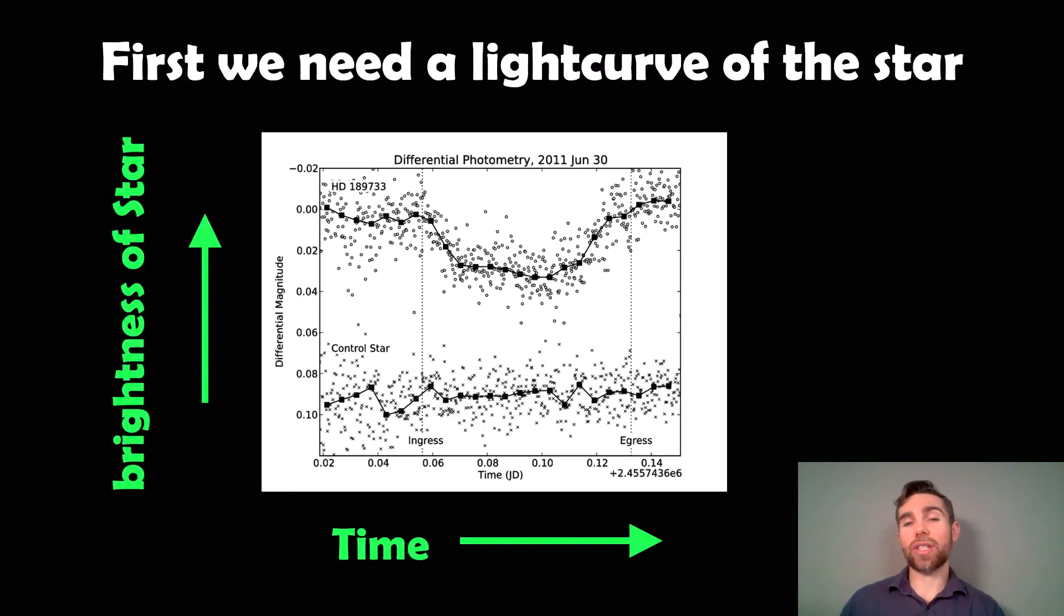The first thing you need to do if you're trying to detect an exoplanet using the transit method is you need a light curve of the star. Here are actually two light curves. The top one is a star which has a transit of a planet in front of it, and the bottom one is a control star, because in order to measure the brightness of the star on the y-axis, you need to compare it to a known star.